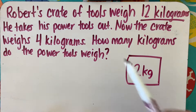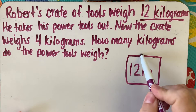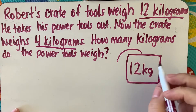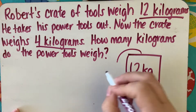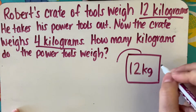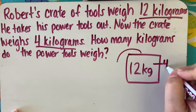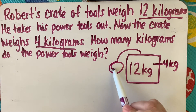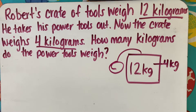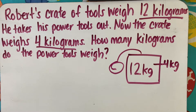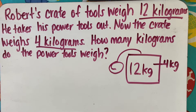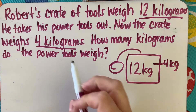He takes power tools out, so something's coming out of this. The crate weighs 4 kilograms after, so it's left with 4 kilograms in there. We need to know how much he took out to make it weigh 4 kilograms. Since we're removing something, we're trying to find the difference between the two numbers, so we're going to be doing subtraction.